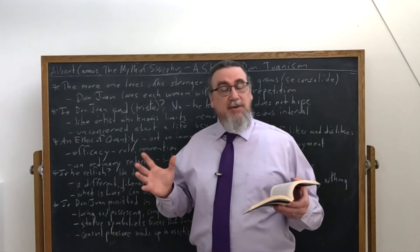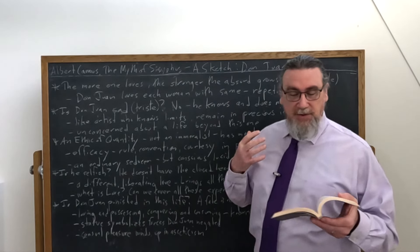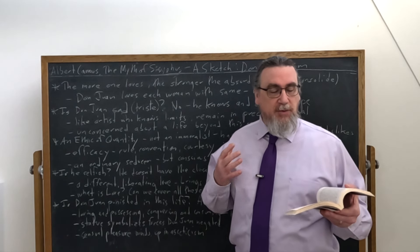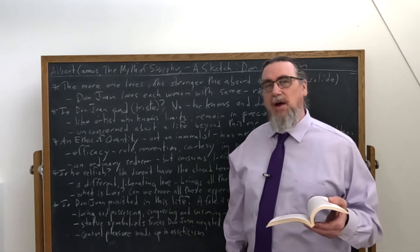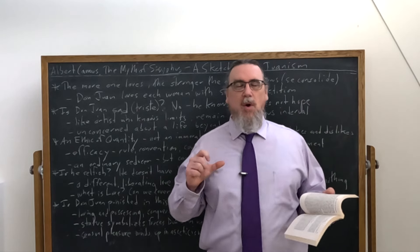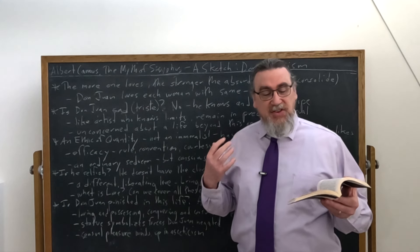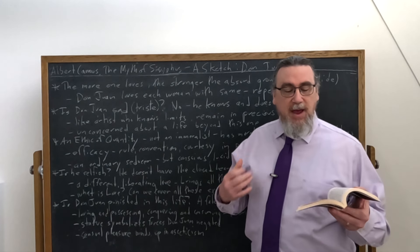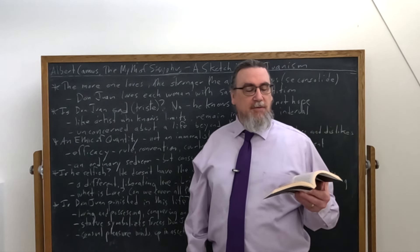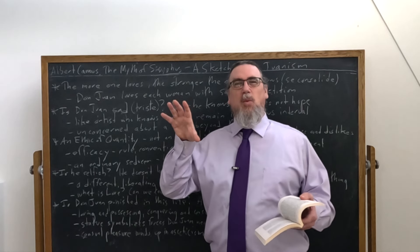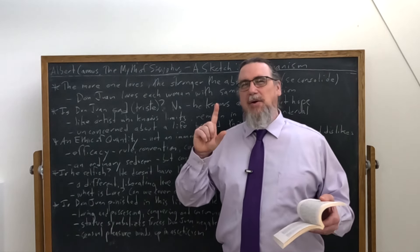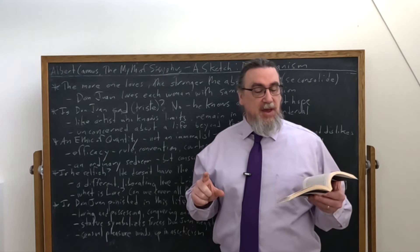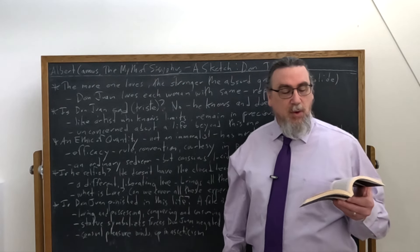So he's got some interesting speculations here about Don Juan. He says, it is not through lack of love that Don Juan goes from woman to woman. It's ridiculous to represent them as a mystic in quest of total love. So these are wrong approaches. And then he says, it is indeed because he loves them with the same passion and each time with his whole self.